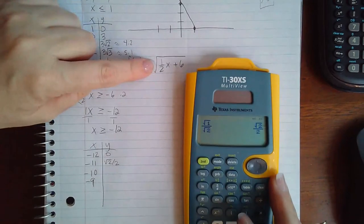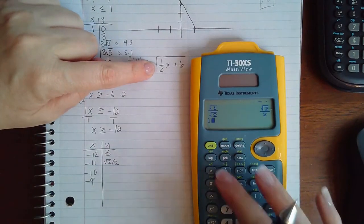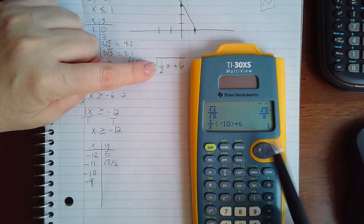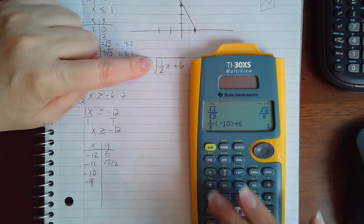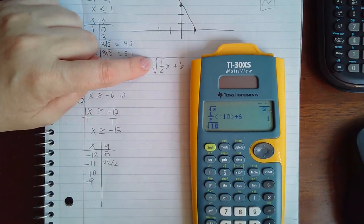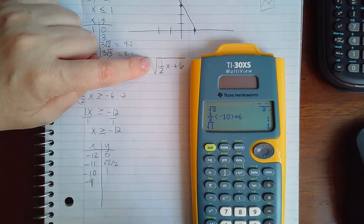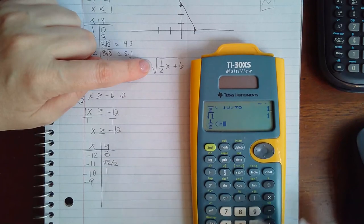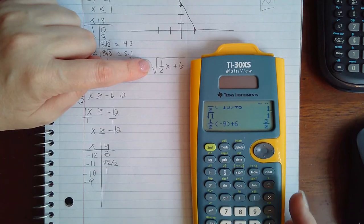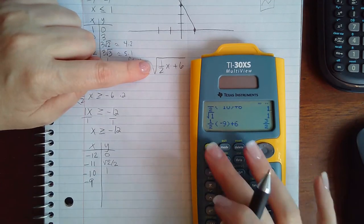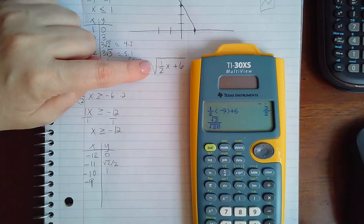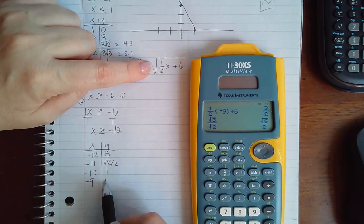Same thing for the next one. I'm going to plug in negative 10 inside the radical first, and then my answer is the square root of this. What is the square root? That's not a fraction, so what is the square root of 1? It's just 1. Now I'm going to do it again, 1 half times negative 9 plus 6. I get 3 halves, but I need to do the square root of 3 halves, so I'm going to do the square root of 3 over the square root of 2, and then it'll rationalize it for me and give me the square root of 6 over 2.